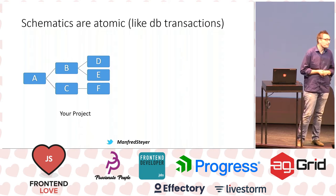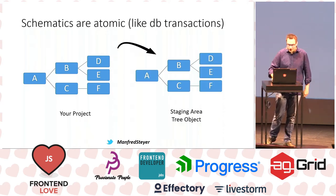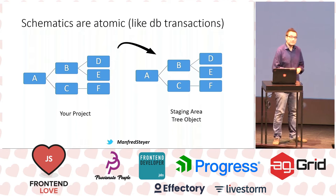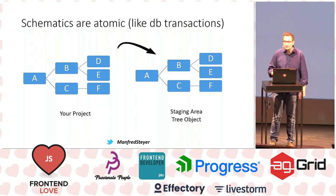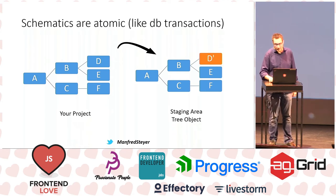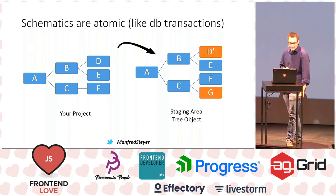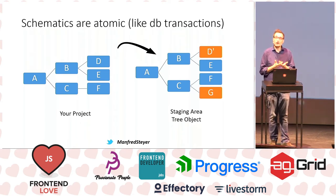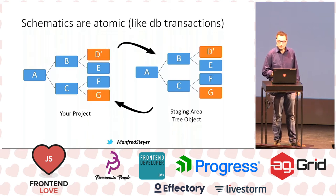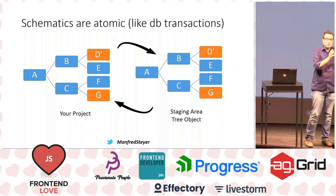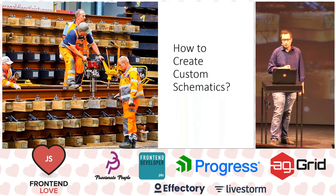One important thing about schematics: a code generator built with schematics is atomic, like a database transaction. That means your current project isn't directly modified. Instead, you use a staging area. The staging area — you will see it later — is defined by a tree object in your source code. Within the staging area you can modify existing source code, add new files, and of course delete files. When you've done this and verified everything is consistent, you can write it back to your hard disk, moving your project from one consistent state into another.